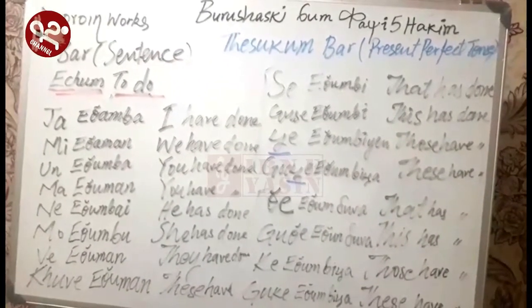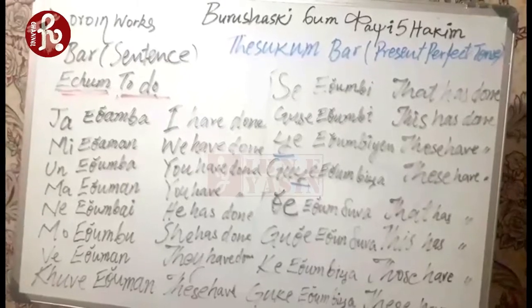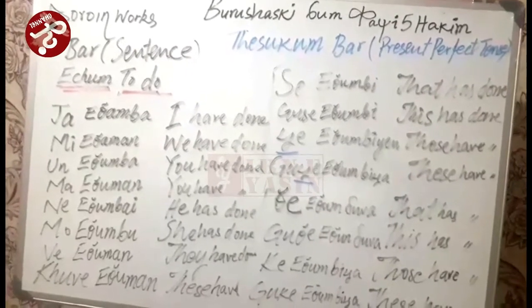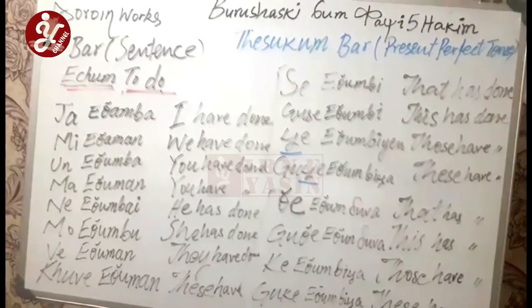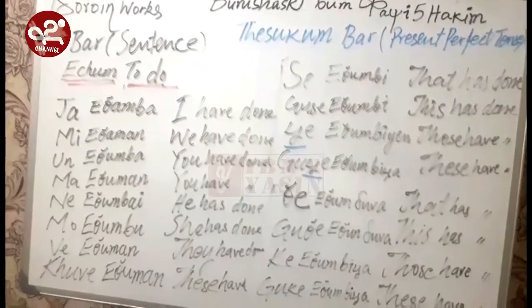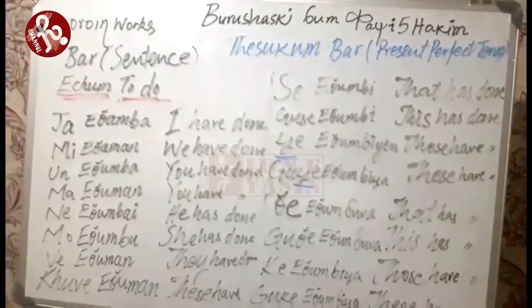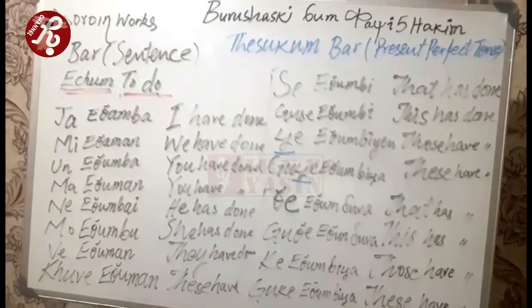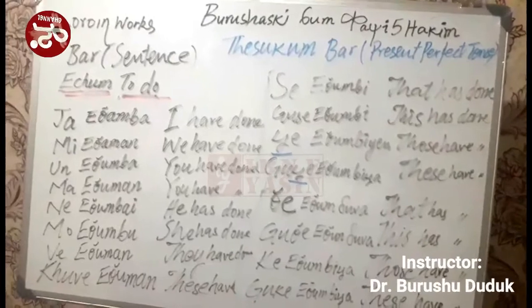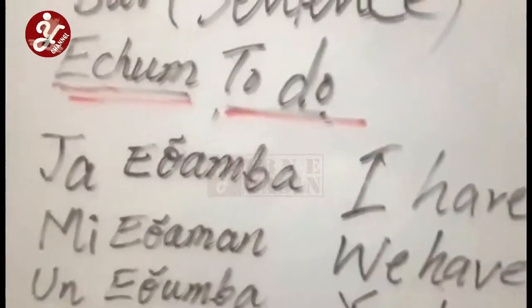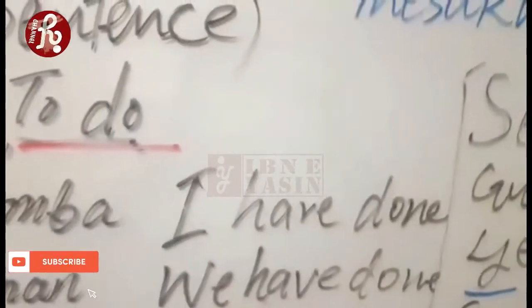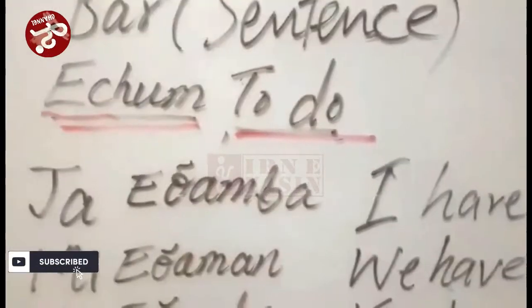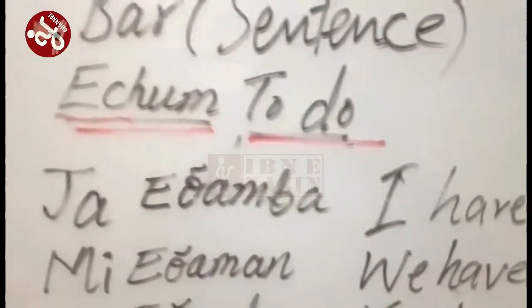In this tense, thesukumbar — the present tense discussion — we are going to take the example of 'echum,' meaning 'to do.' So we will give you some examples. 'Ja etamba' — that means 'I have done' in English. In English you use 'have' and 'has.'